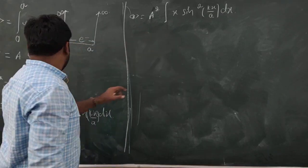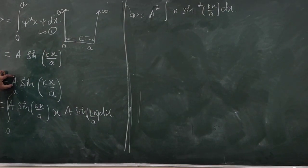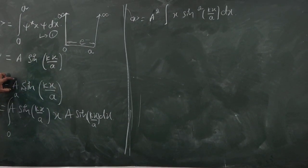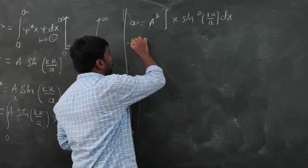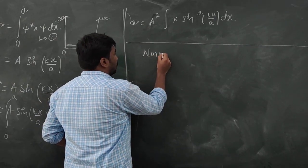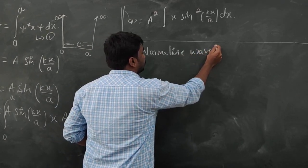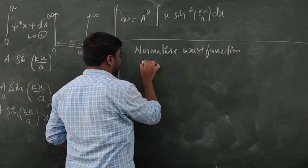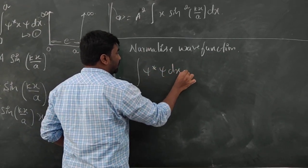This wave function is not normalized. If the wave function is normalized, we can get the value of A. So first we need to normalize the wave function. The normalization condition is: the integral of ψ* ψ dx is equal to 1.